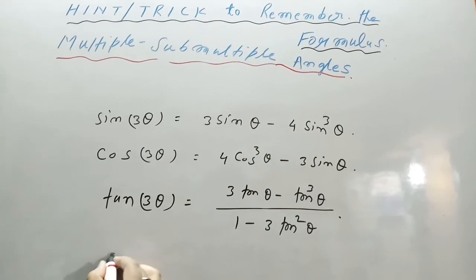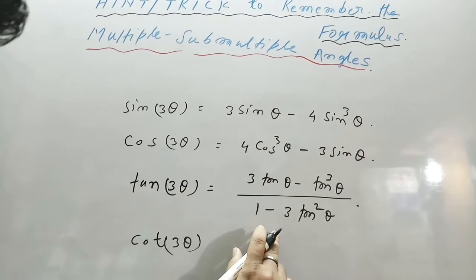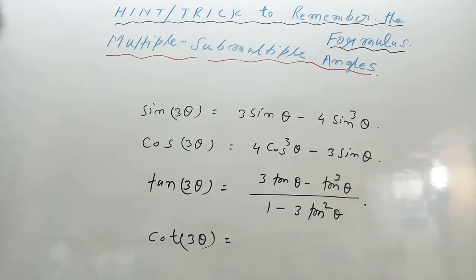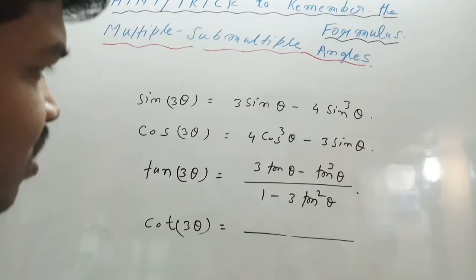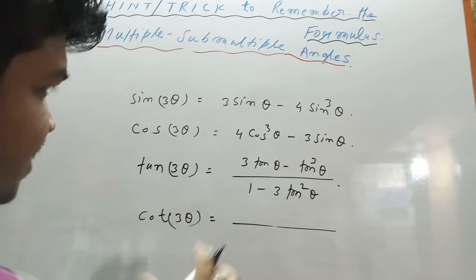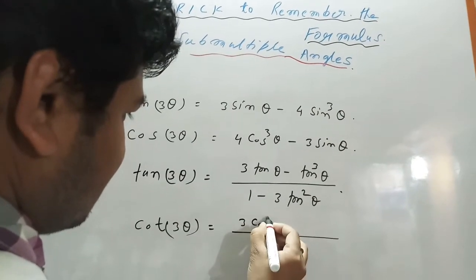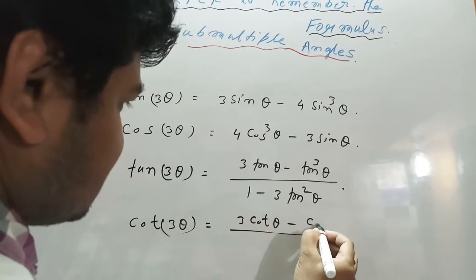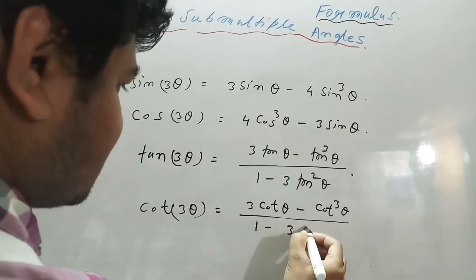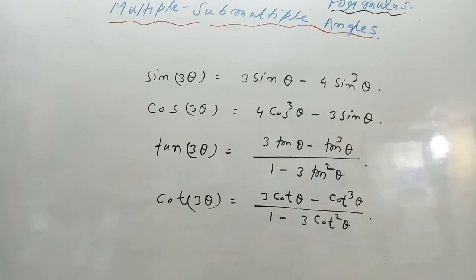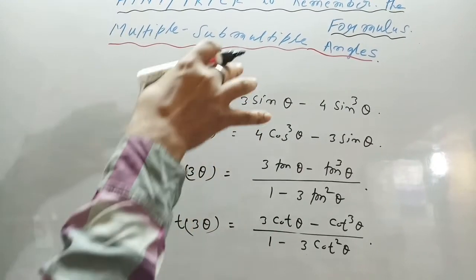This is the technique: for cos 3θ, the first term is the cube (4 cos³θ) and the last term has power 1 (minus 3 cos θ). For sin 3θ, the first term has power 1 and the cube is last. This is the tariqa — the memory method — for remembering these formulas.